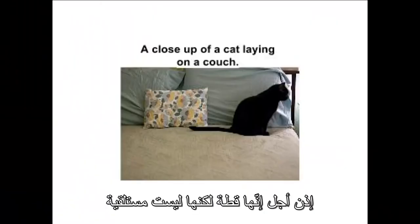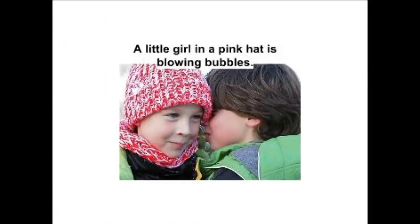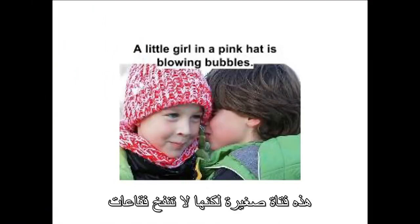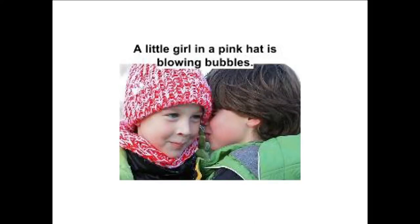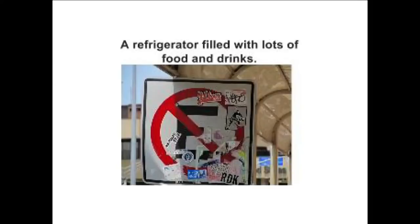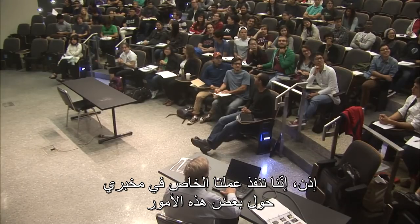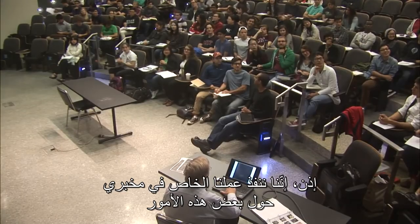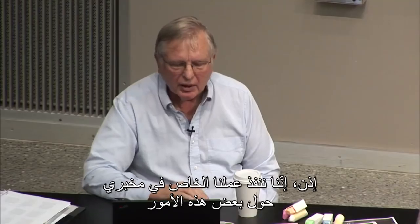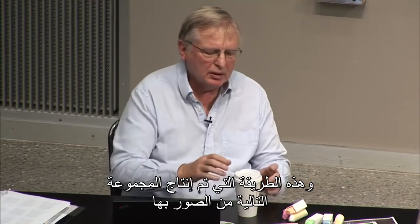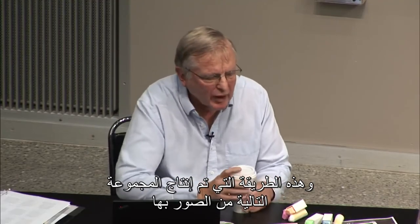This is what has stimulated all this enormous concern about artificial intelligence, because a naive viewer looks at that picture and says, oh my God, this thing knows what it's like to play or be young or move or what a Frisbee is. And of course it knows none of that — it just knows how to label this picture. To the credit of the people who wrote this paper, they show examples that don't do so well: it's a cat, but it's not lying. It's a little girl, but she's not blowing bubbles.